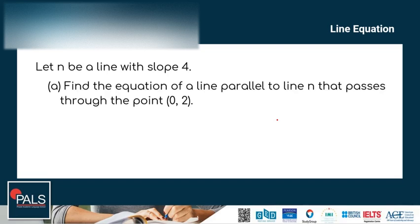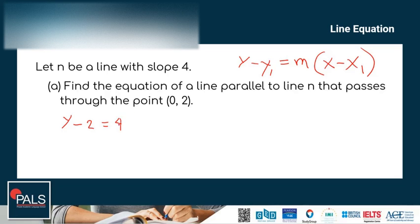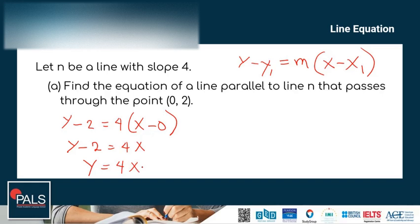Using the point-slope formula: y minus y₁ equals m times (x minus x₁). Plugging in the values: y minus 2 equals 4 times (x minus 0). Simplifying: y minus 2 equals 4x, and moving minus 2 to the other side, we get y equals 4x plus 2. This is the equation of the line parallel to line n passing through the point (0, 2).